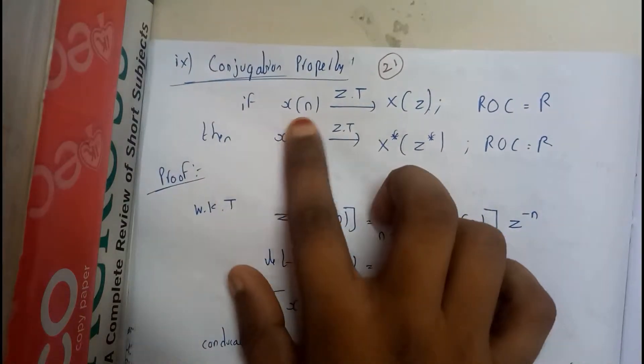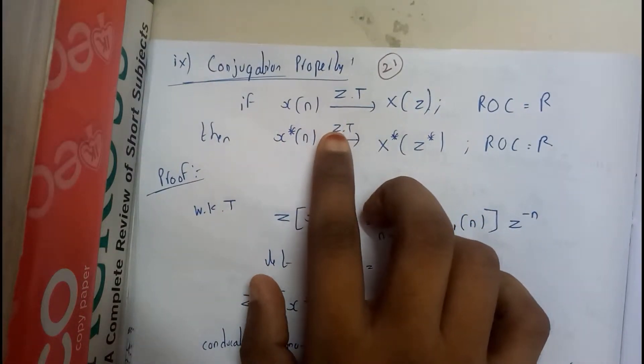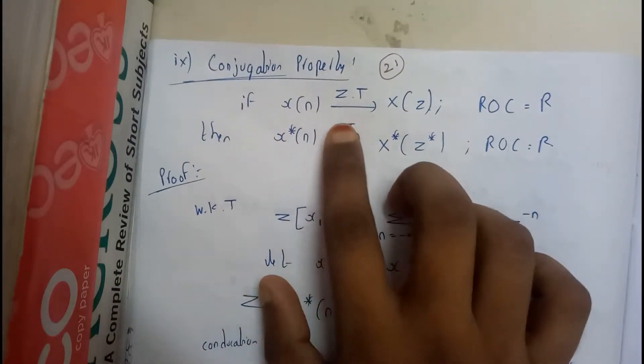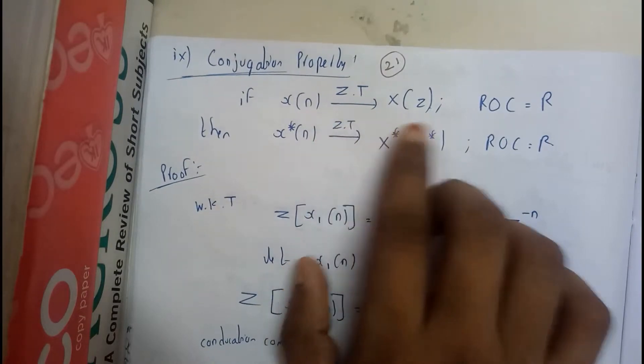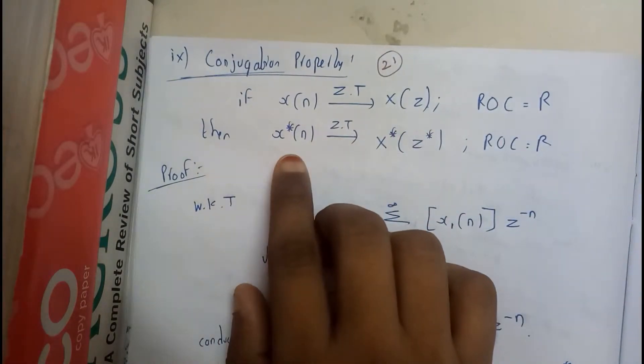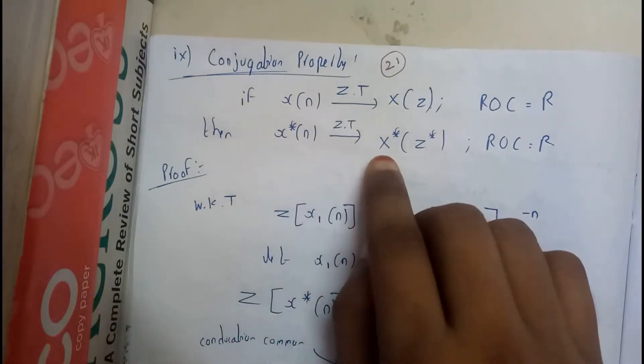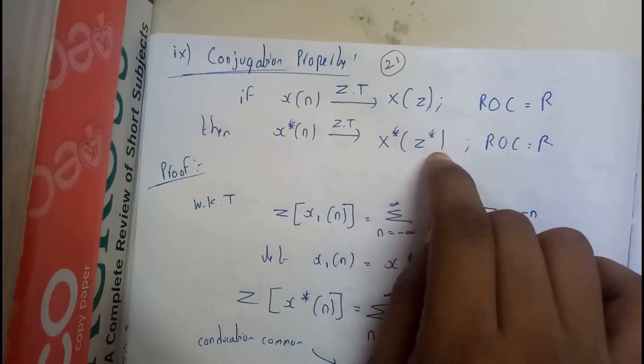So if x of n, the z transform of x of n is x of z, then ROC is equal to R. Then conjugation, the z transform of conjugate of n is x conjugate of z conjugate.